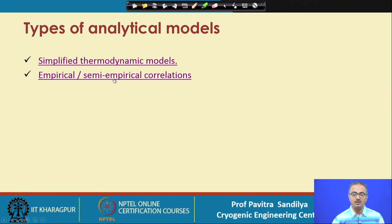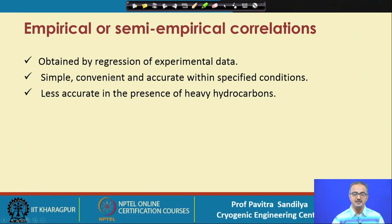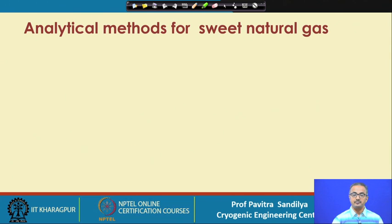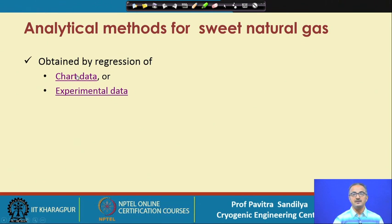Empirical or semi-empirical correlations are obtained by regression of experimental data. They are quite simple, convenient, and very accurate within specified conditions, but outside those conditions they may not give good results since the regression is valid only within a specified range. They are less accurate in the presence of heavy hydrocarbons, but still quite popular. For sweet natural gas — which has almost no sulfur content — there are expressions obtained by regressing chart data such as the Maketa-Vehe chart and experimental data.